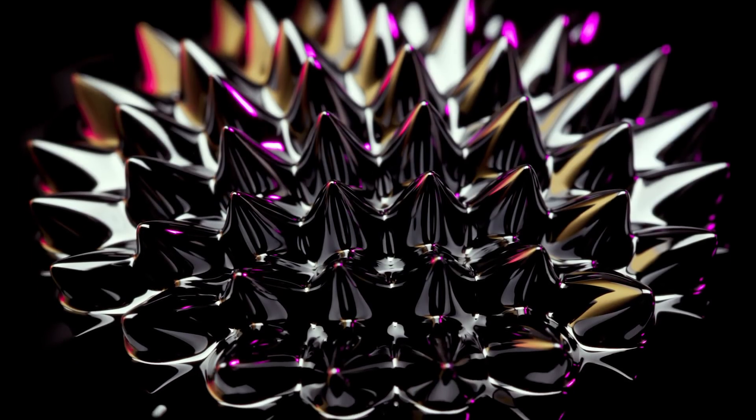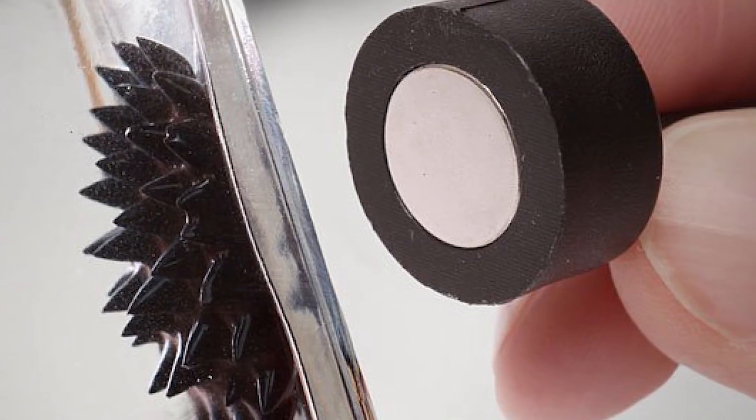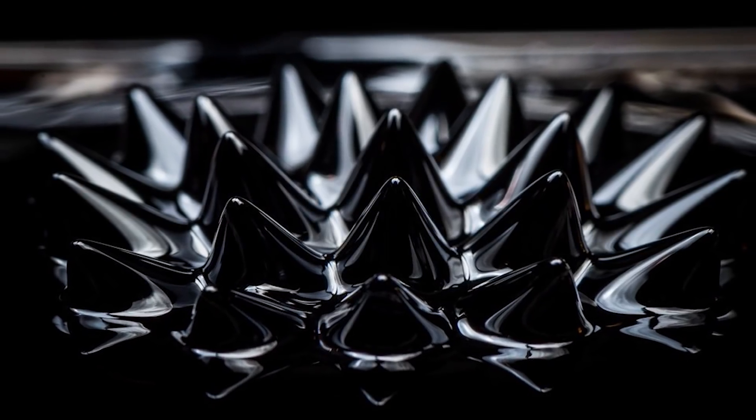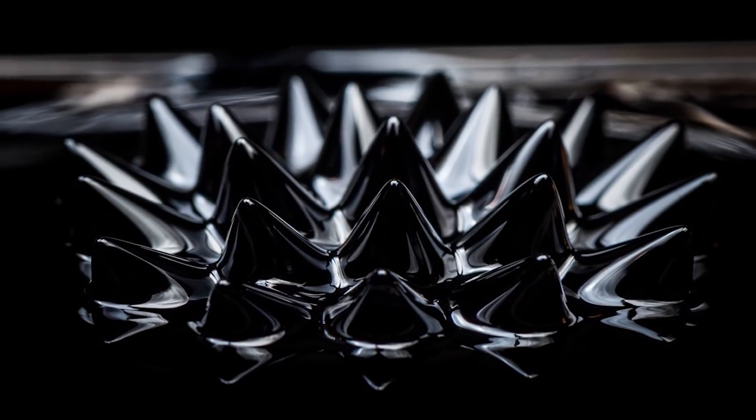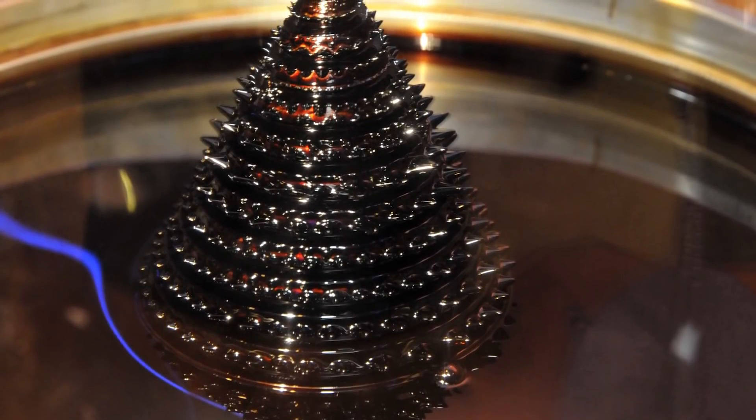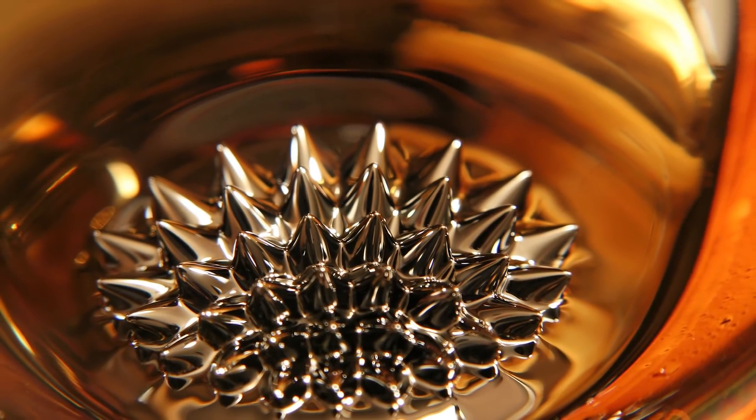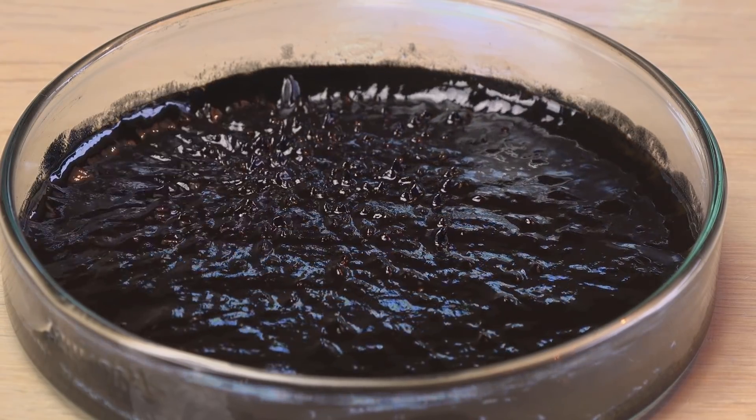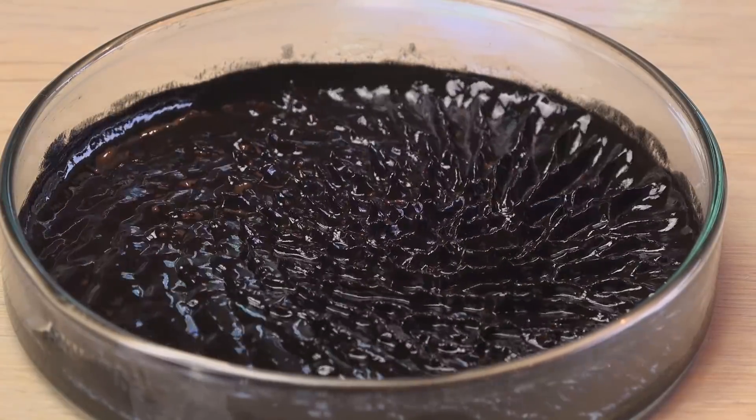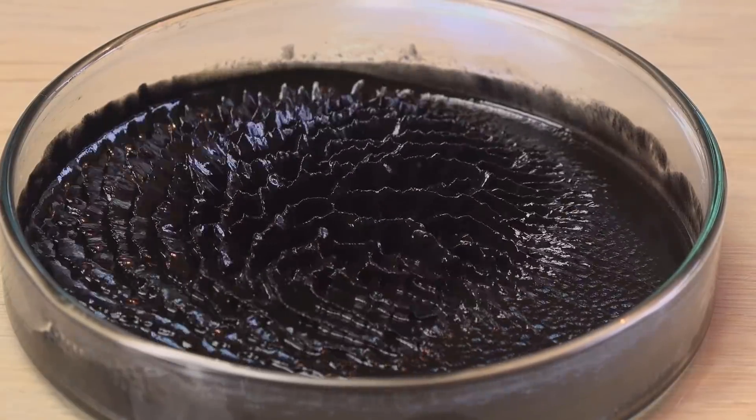Once this is complete, you can take your rare earth magnet and press it along the side of the glass. As the magnet attracts the metallic components of the mixture, it forms some really interesting spikes on top and looks really cool. If you don't mind making a mess, you can pour the fluid onto any surface, using the magnet to move it around at will. This can be messy as toner will end up staining most materials, so do be mindful of this when you attempt the experiment.